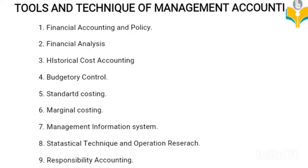Sixth: marginal costing. Under marginal costing, cost is divided into fixed and variable portions, and variable costs are used for decision making. Seventh: management information system (MIS). It is a system that collects, stores, and processes data and provides information to managers for planning, controlling, and decision making. With the development of electronic data processing and computer systems, reporting to management has considerably improved. Eighth: statistical techniques and operations research, including theory of probability, sampling, linear programming, game theory, simulation, etc.